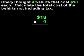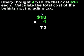We multiply the cost of each shirt, $18, by the number of shirts, 4. 4 times 8 is 32, so we put a 2 in the units column and carry the 3. 4 times 1 is 4, plus 3 is 7, so we put a 7 in the tens column. So $18 times 4 is $72.